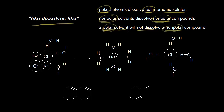An example of a polar solvent is water. An example of a nonpolar compound could be something like oil, and we know that water will not dissolve oil. Let's go back to this first idea of a polar solvent being able to dissolve a polar compound, or a polar solvent dissolving an ionic compound like sodium chloride.